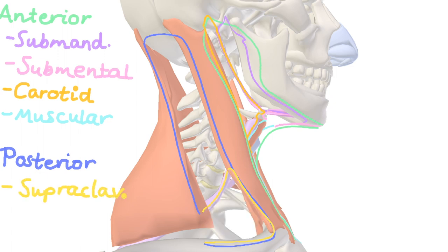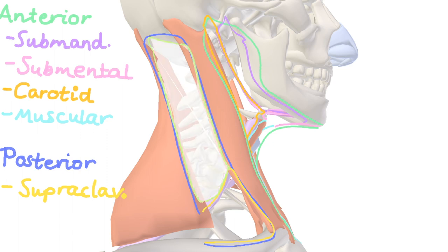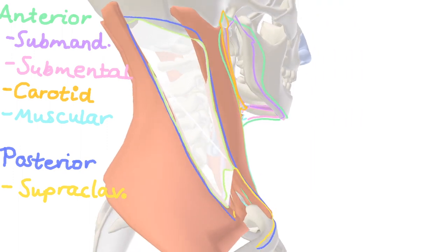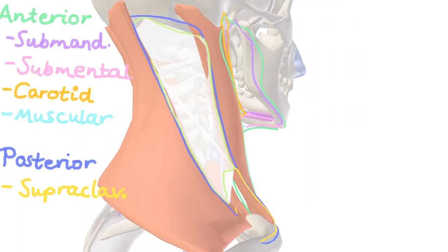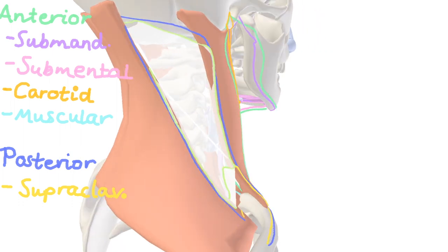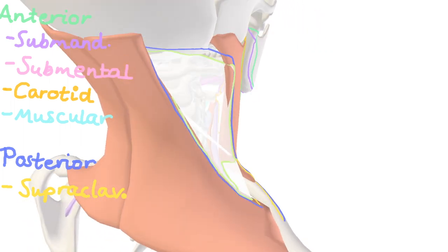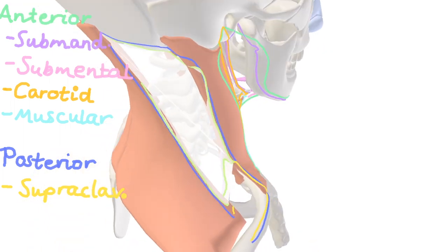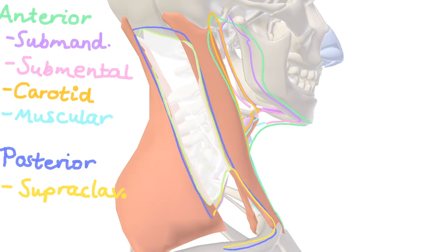Last but not least, we have the occipital triangle, bordered by the omohyoid, trapezius, and sternocleidomastoid. Within there we'll find cranial nerve 11 the accessory nerve, the subclavian artery, the external jugular vein, and the trunks of the brachial plexus. That's the occipital triangle.